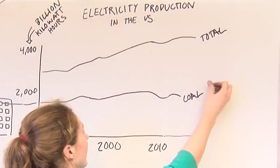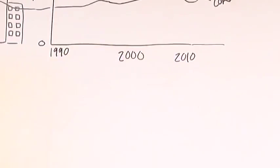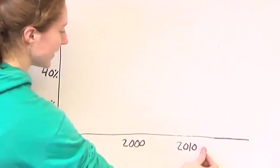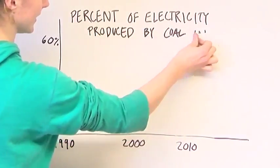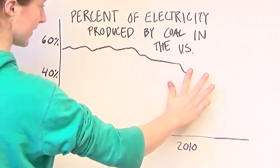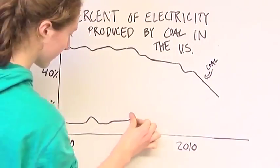Because the amount of electricity produced by coal has held fairly steady, and the electricity consumed in the US has been increasing, the percentage of electricity produced by coal has been dropping. So what energy source is filling in for the lack of coal? Natural gas.